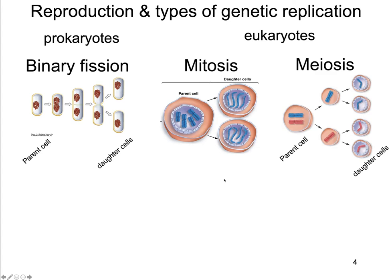Hi folks, so we're going to pick up where we left off, talking about reproduction and the types of genetic replication organisms use to reproduce. We talked about prokaryotes and the fact that they use binary fission to go from a parent cell to daughter cells. And eukaryotes can use mitosis and meiosis to go from a parent cell to daughter cells.